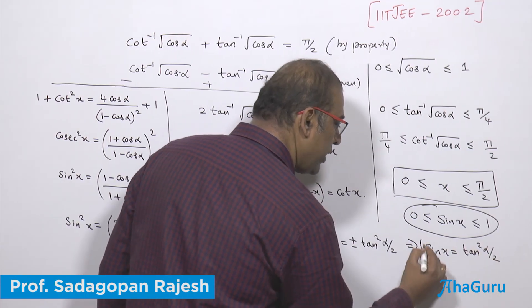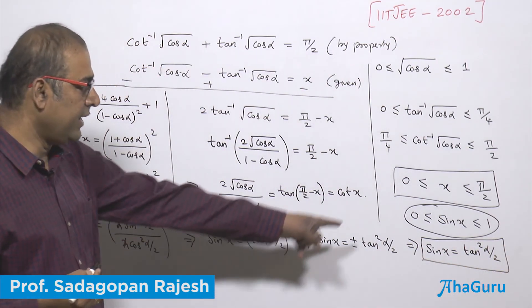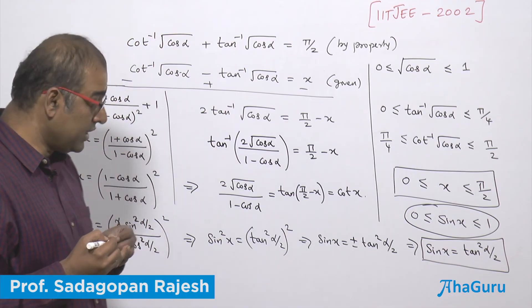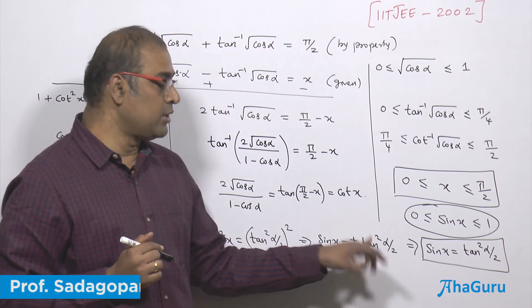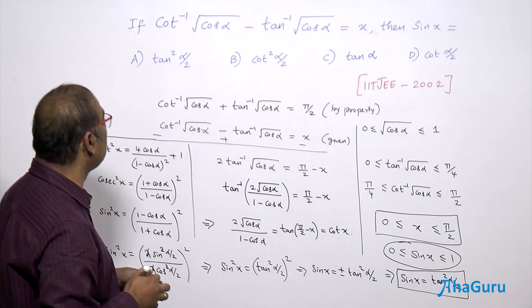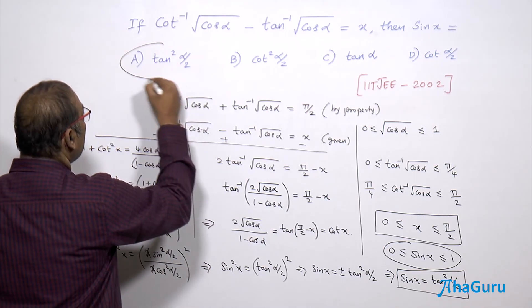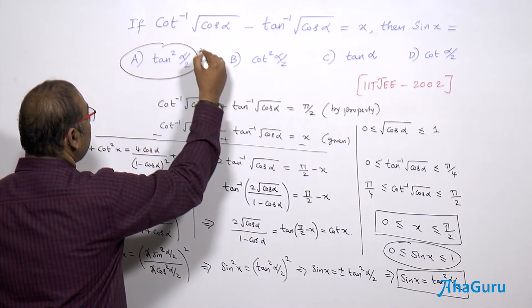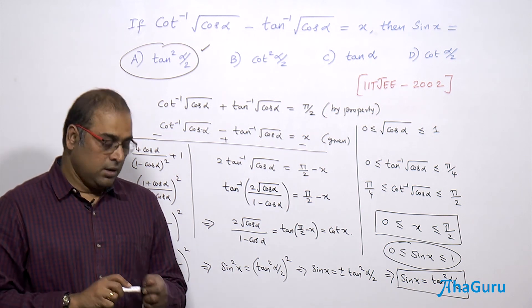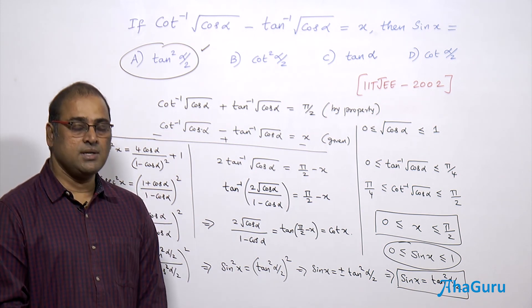So sin x = tan²(α/2), and the earlier range analysis confirming sin x is non-negative is what helps us eliminate the negative option. The correct answer is option A: tan²(α/2).